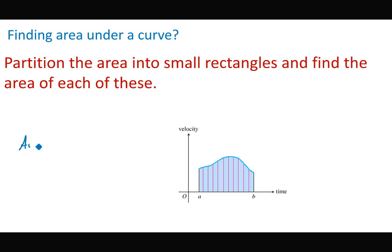The area of each rectangle will be the height of the rectangle times delta t — delta t just means the change in time. The height of each rectangle is v(t), because v(t) gives the height, times delta t for the width.